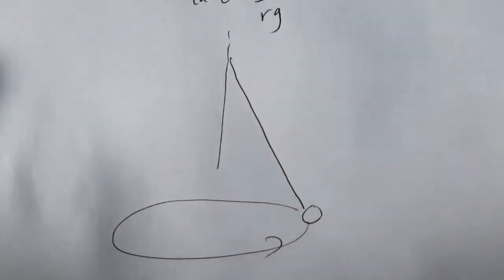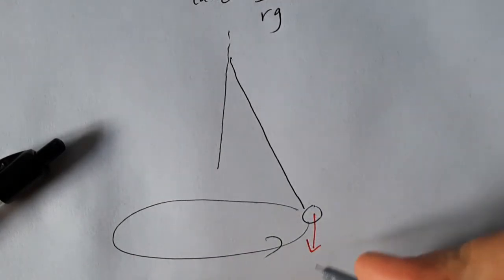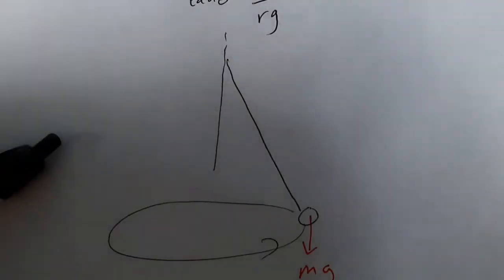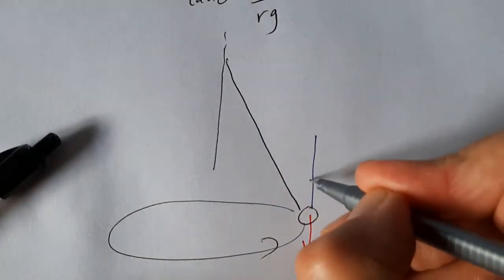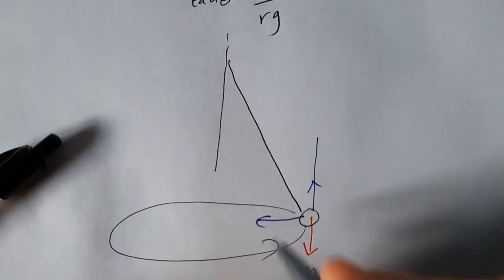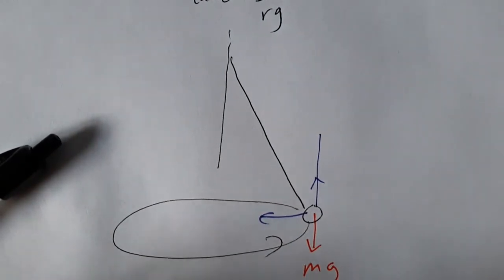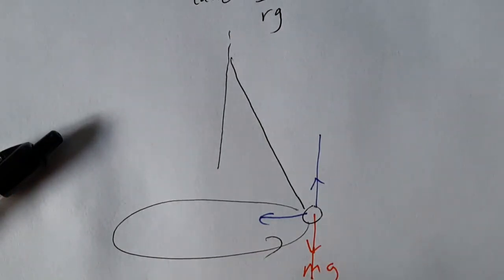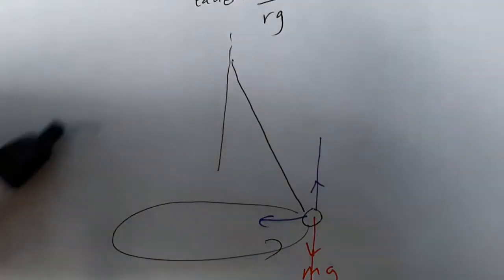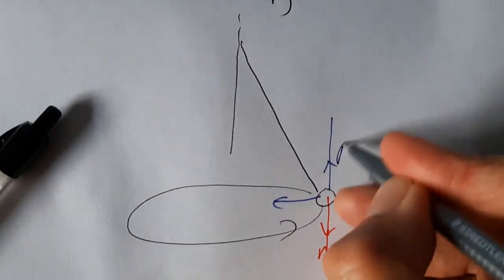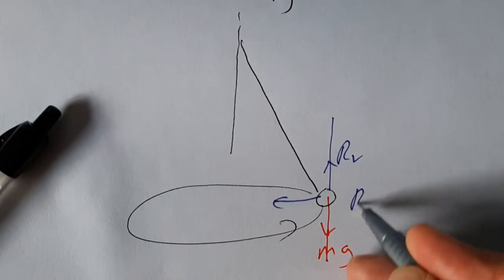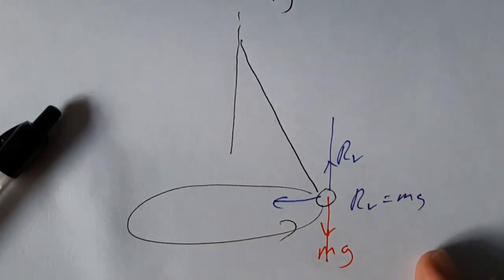But a ball on a string swinging around. And again, we've got the weight acting straight down. We've got the tension - like the reaction force has a vertical component and a horizontal component. The vertical component of the reaction force must be equal to Rv must equal to mg because it's in vertical equilibrium.